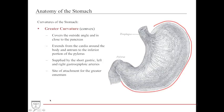The greater curvature is on the convex side of the stomach — the outside angle, very close to the pancreas. It extends from the cardia all the way around to the pylorus, and is supplied by the short gastric arteries and the left and right gastroepiploic arteries.